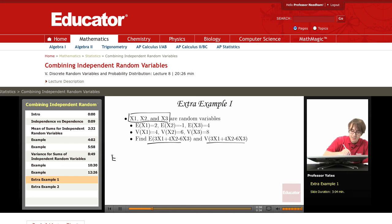So for the first one, I have the expected value of 3 times x1 plus 4 times x2 minus 6 times x3. Well I can bring out the coefficients, so this is 3 times the expected value of x1 plus 4 times the expected value of x2 minus 6 times the expected value of x3.